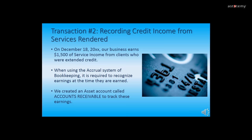Now we're ready for transaction two, recording credit income from services rendered. On December 18th, 20XX, Bookkeeping Clean and Simple earns $1,500 of service income from various clients who are extended credit. This is monies owed to our business, and when using the accrual system of bookkeeping, it is required to recognize earnings at the time they are earned. We have created an asset account called Accounts Receivable to track these earnings owed to us.